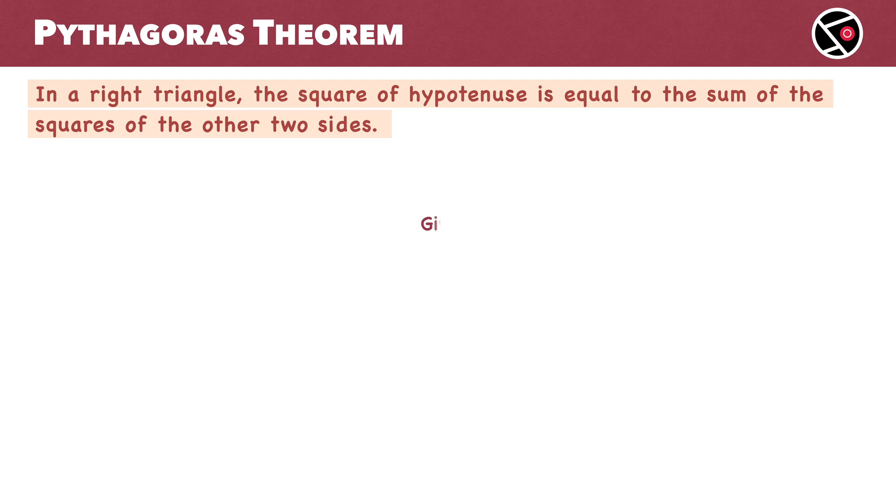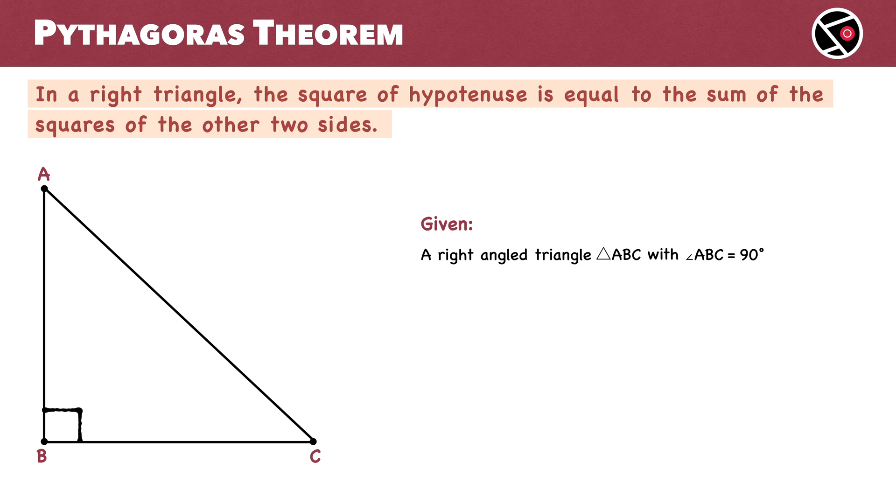We have a right triangle ABC with angle ABC equal to 90 degrees. We have to prove that the square of hypotenuse AC equals the square of side AB plus the square of side BC.